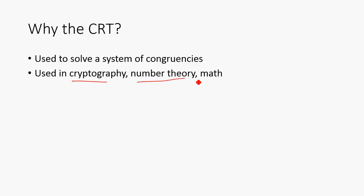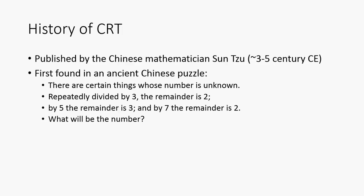All of these are pretty important for what we're trying to do. So here's some history. It was published by a Chinese mathematician called Sun Tzu in the 3rd through 5th century CE, somewhere in there. It was first found in this ancient Chinese puzzle.